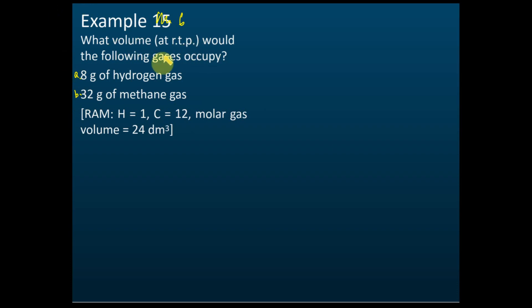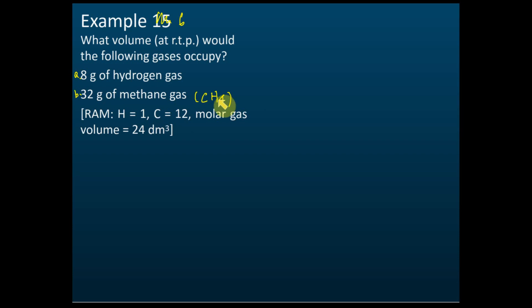Example 6: What volumes would the following gases occupy — 8 grams of hydrogen gas and 32 grams of methane gas? The relative atomic mass of hydrogen is 1 and carbon is 12. Methane has the formula CH₄ — one carbon and four hydrogens. Hydrogen gas is H₂. Always remember hydrogen in nature is H₂, not just H.